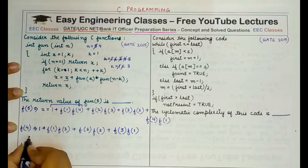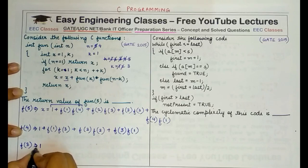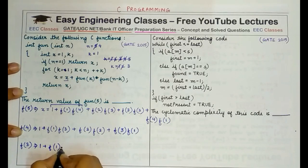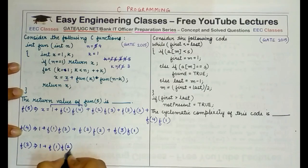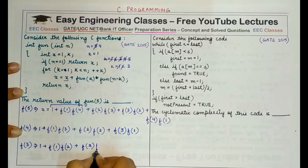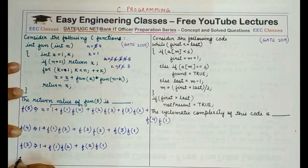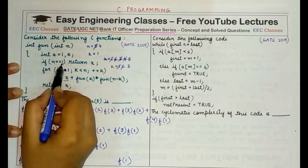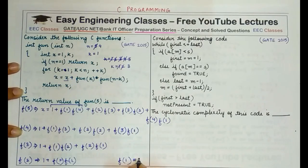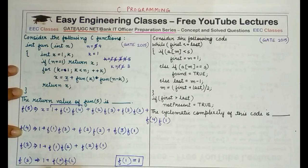For f(3): 1 plus f(1) times f(2) — here n minus k is 3 minus 1 equals 2 — then plus f(2) times f(1). For f(2): it is 1 plus f(1) times f(1). And f(1): since n equals 1, we return x which is 1. Substituting back into f(2): 1 plus 1 times 1 equals 2, so f(2) returns 2.